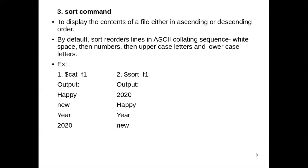Next is the sort command. As the name indicates, it is used to sort the content of a file either in ascending or descending order. By default, sort reorders lines in ASCII collating sequence. ASCII collating sequence gives first preference to white spaces, then numbers, then uppercase letters, then lowercase letters. Looking at the example: the content of file f1 has four lines — one starting with a capital letter, one with a small letter, one with a capital letter, and one with a number. The command sort followed by the file name sorts in ASCII collating sequence, so 2020 comes first, then uppercase words in alphabetical order, then the lowercase line.